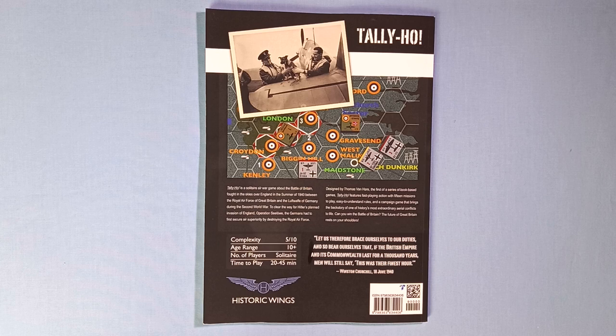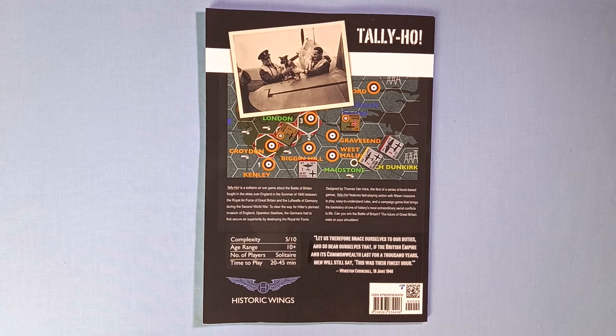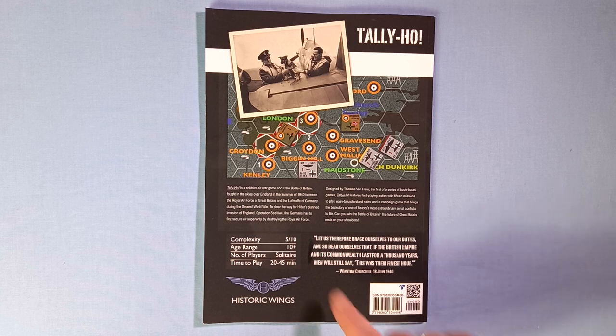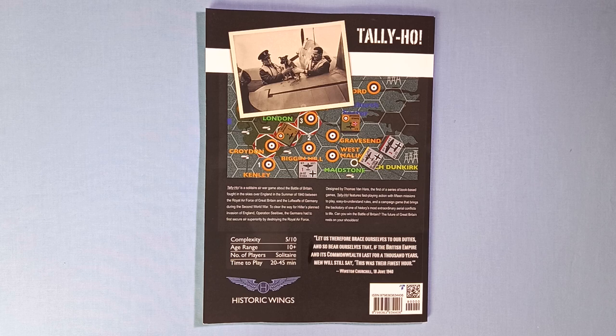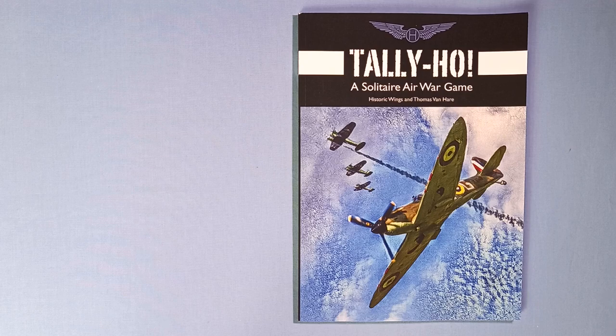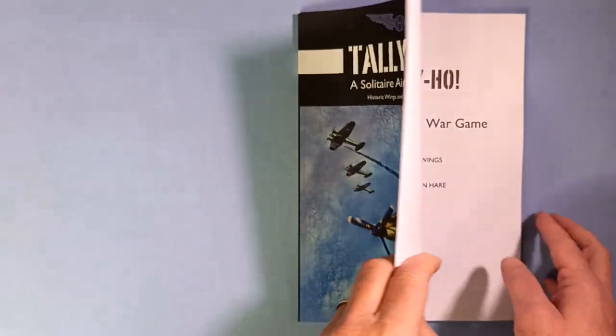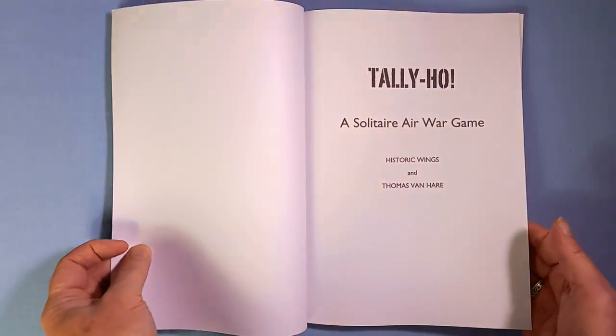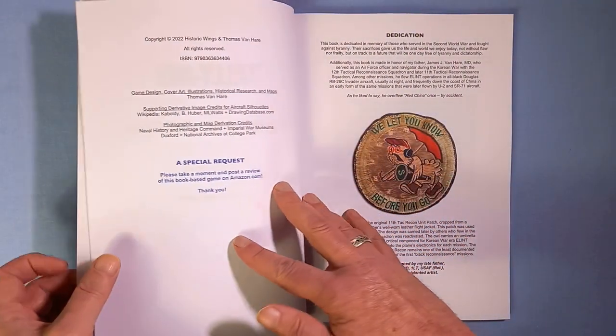Can you win the Battle of Britain? The future of Britain rests on your shoulders. And here's an excerpt from one of Winston Churchill's famous speeches. Complexity 5 out of 10, age range 10 plus, number of players of course solitaire, time to play 20 to 45 minutes. This book is 116 pages long, but fear not, the rules are only 17 pages.